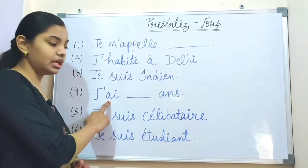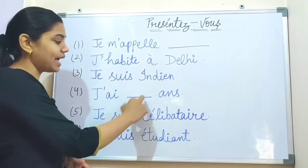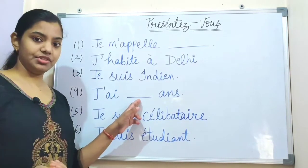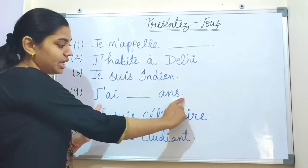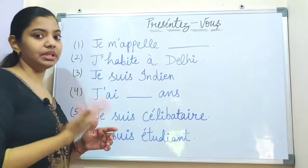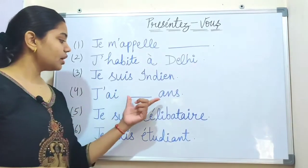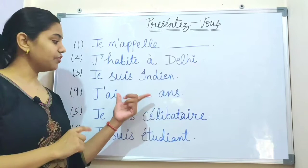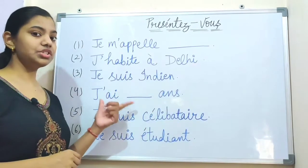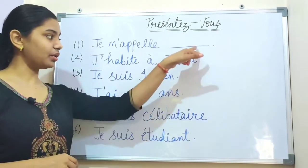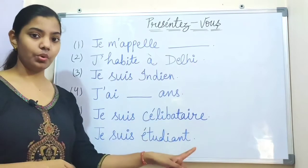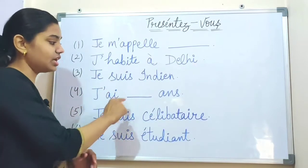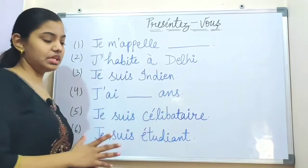Then we have a sentence where we put our age. For example, if you are 20, you say: J'ai vingt ans — that means 'I am 20 years old'. So j'ai vingt ans is how Rahul says he is 20 years old.